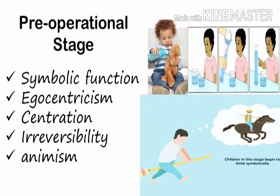Next, we have irreversibility. This is the inability of the child to reverse his or her thinking. The child can understand that 2 plus 3 is 5, but cannot understand that 5 minus 3 is 2. Another example: a teacher asks a kindergarten student, 'Meron ka bang kapatid, Joanna?' Joanna says yes. The teacher asks the name of her sibling — Isa. The teacher then asks, 'Si Isa, may sister ba siya?' The child cannot figure it out because the answer is that Isa's sister is Joanna herself — the very child the teacher is asking. The child cannot yet reverse that thinking.